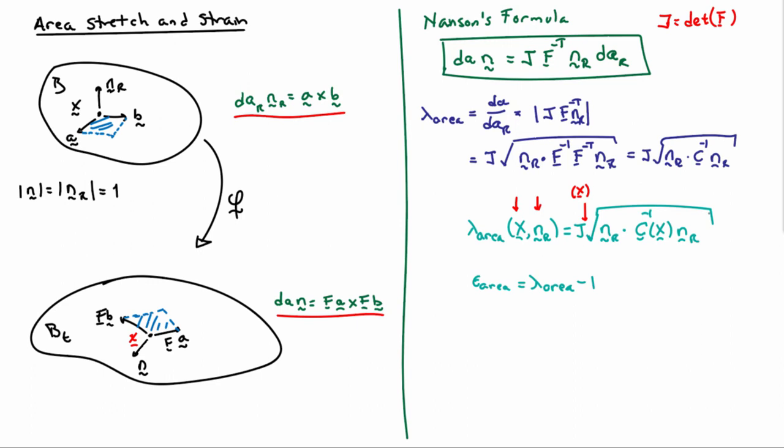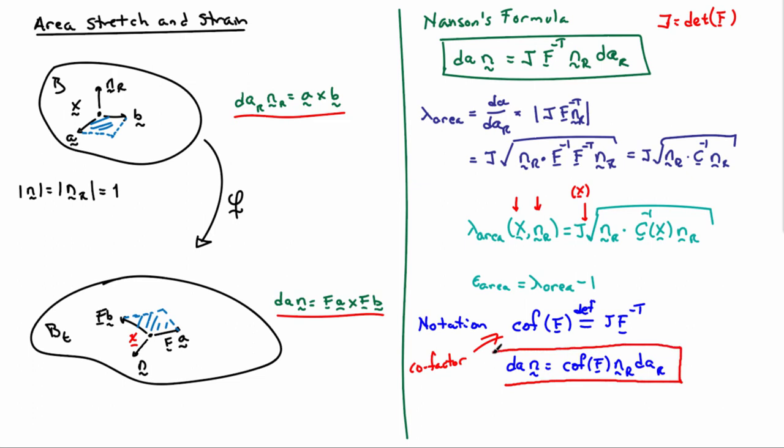Just one quick bit of nomenclature before stopping: the cofactor of f is defined to be j f inverse transpose. So sometimes one sees Nansen's formula written in this way, utilizing the cofactor of f. Just want you to be aware of that notation.